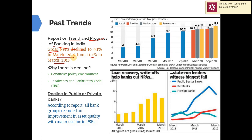We can understand this better through a graph. Former RBI Governor Raghuram Rajan and the NDA government decided to recognize bad loans and NPA, which had not been done earlier. Due to this initiative, we can see a continuous increment in recognized loans from 2014 till 2018. The graph also shows that the biggest fall in NPA — around 9.2% — is seen in public sector banks, with a smaller decline seen in foreign banks.